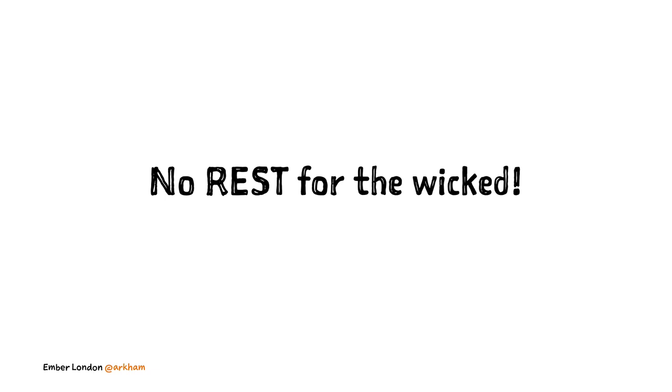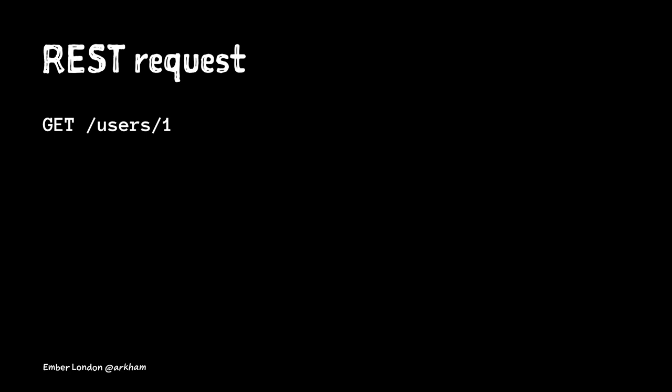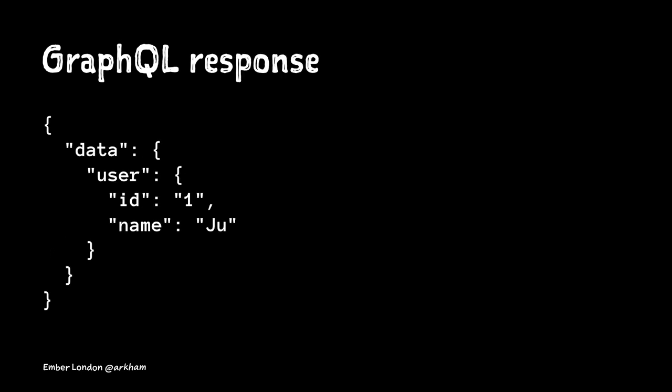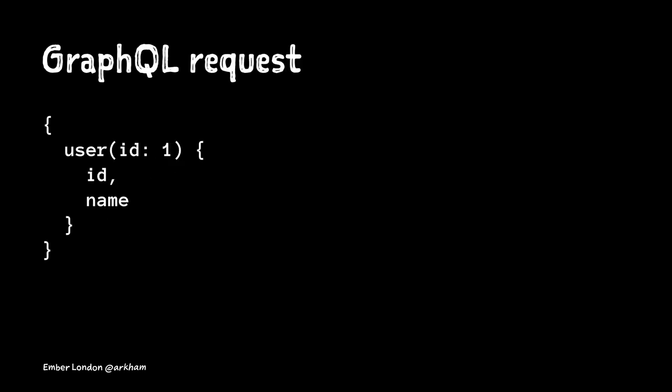Starting from the title of the talk, 'No Rest for the Wicked.' Let's say we have a REST request: GET /users/1. What's going to be the response? We have no idea. Our only way to understand that is to load up documentation, open the source code, or call it and look at the payload in Chrome Inspector. Instead, if I see a GraphQL request asking for user with ID 1 and returning the ID and name, I can pretty much predict the response. There's a striking similarity between the shape of the request and the shape of the response — they have the same shape.